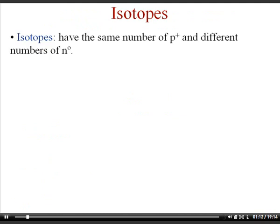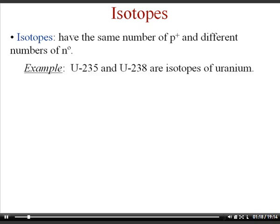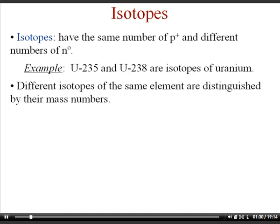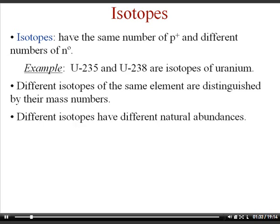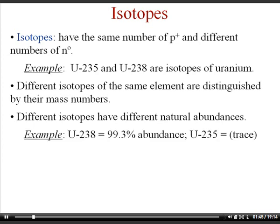Isotopes have the same number of protons but a different number of neutrons — basically an element that's a little heavier. For example, uranium-235 and uranium-238 are isotopes of uranium. U-235 has fewer neutrons; U-238 has more. Different isotopes have different natural abundances: U-238 makes up 99.3% of all uranium, while U-235 is a trace amount — and it's U-235 that's used in atom bombs.